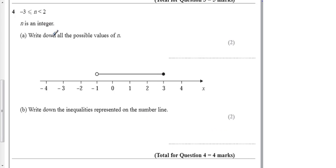It says n is an integer, so write down all the possible values of n. Well, we need to know that this one, this extra little line means we're allowed minus 3 because it doesn't have it here, we're not allowed 2.